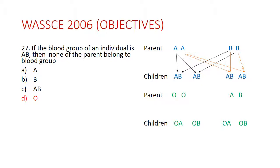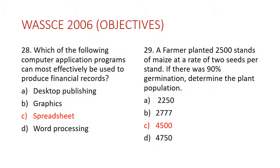Question 28: Which of the following computer application programs can most effectively be used to produce financial records? The answer is C — spreadsheet. Spreadsheet is one of the common software programs used to produce and process financial data.